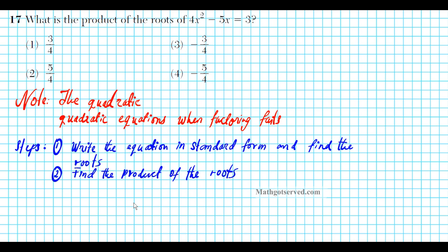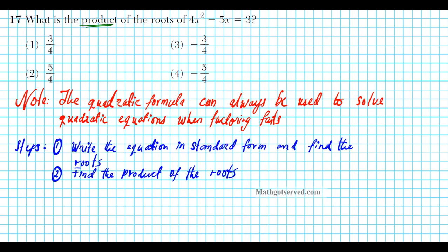Let's take a look at problem 17. It says, what is the product of the roots of 4x squared minus 5x equals 3? The quadratic formula can always be used to find the roots of a quadratic equation. Sometimes a quadratic expression is prime and cannot be factored by grouping, so you have to resort to completing the square or the quadratic formula — they are equivalent. The steps: write the equation in standard form, find the roots, then find their product.